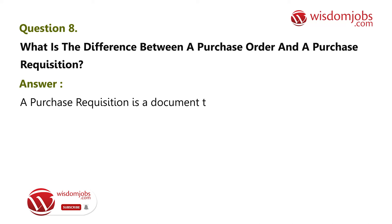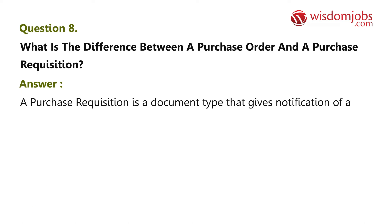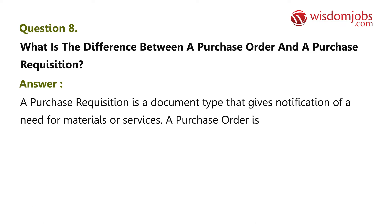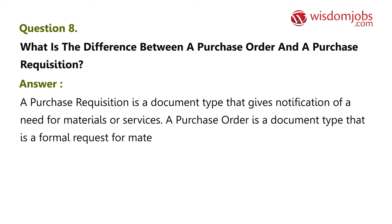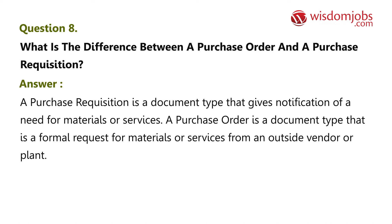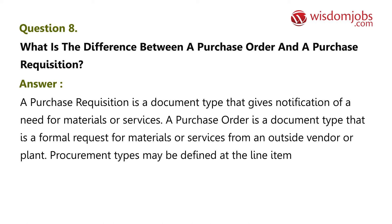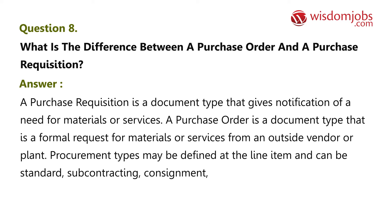Question 8: What is the difference between a purchase order and a purchase requisition? Answer: A purchase requisition is a document type that gives notification of a need for materials or services. A purchase order is a document type that is a formal request for materials or services from an outside vendor or plant. Procurement types may be defined at the line item and can be standard, subcontracting, consignment, stock transfer, or an external service.